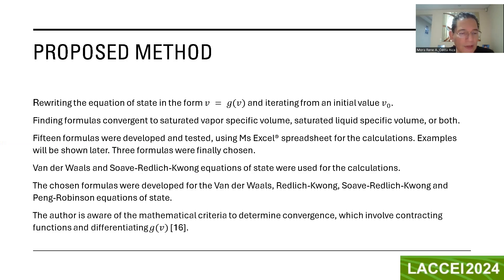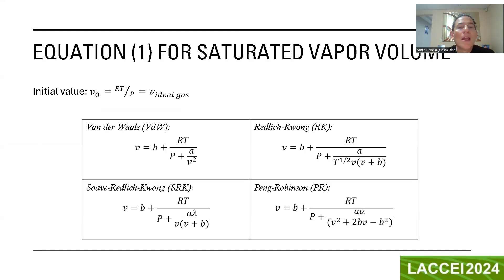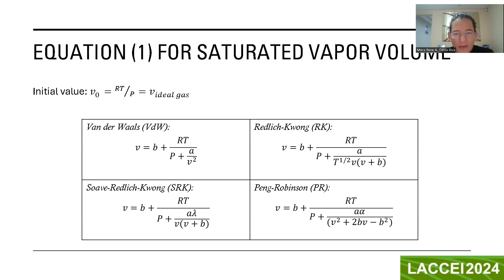The author is aware of the mathematical criteria to determine convergence, which involve contracting functions and differentiating the g function. This is equation one for the saturated-vapor volumes, with an initial value equal to the ideal gas specific volume. We can see the formulas obtained for each of the selected equations of state.